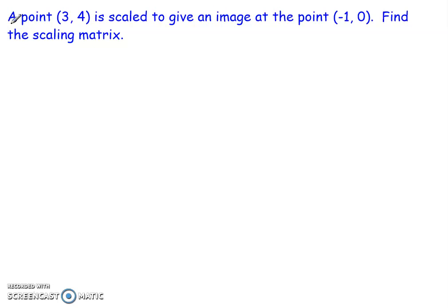Now the last one talks about a point (3, 4) being scaled to give an image at the point (-1, 0). I want to find the scaling matrix for this. Now remember we mentioned that the scaling matrix, in this case let's call it S, is given by μ, 0, 0, λ. If we're going to look at just scaling an x and a y to give us a new image at a point, this is the format of the matrix that we're going to use.